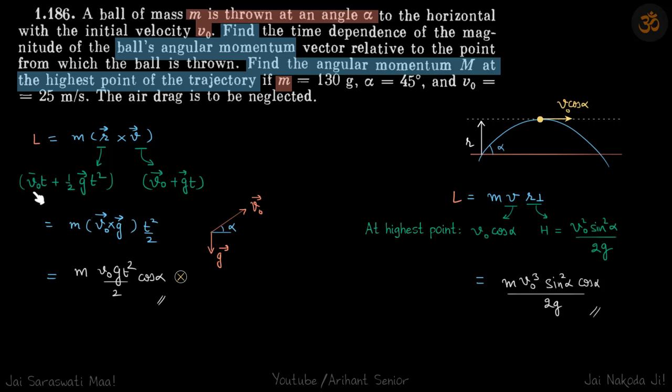And final velocity at any moment is v naught plus g t. We just do the cross product of position and velocity. So doing this we get the result in form of v naught cross g.